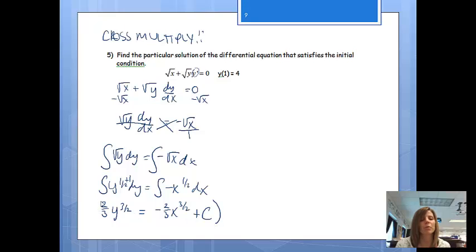Trying to simplify this a little bit more for y before I solve for c. To get rid of this 2 thirds, I'll multiply the entire thing by 3 halves. So when I multiply, distribute that 3 halves, I'll get y to the 3 halves equals negative x to the 3 halves plus, remember, 3 halves times c is still just c.